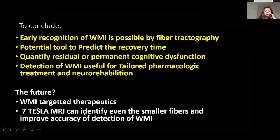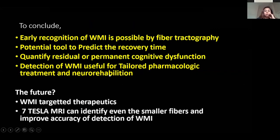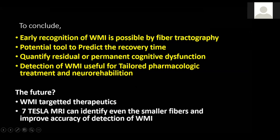To conclude: with tractography, early recognition of white matter injury is possible. It is a potential futuristic tool to predict recovery time — you can tell the patient's caregiver how long recovery may take, and tailor rehabilitation and pharmacotherapy based on quantification of white matter damage. We can also assess whether cognitive dysfunction will be residual or permanent. The future is exciting: there is research on white matter injury-targeted therapeutics, and with 7 Tesla MRI applied to fiber tracking, we can detect even the smallest white matter fibers and improve accuracy in identifying the exact damage. I'm extremely thankful for this opportunity to present my research.